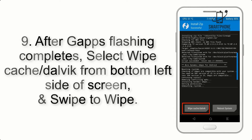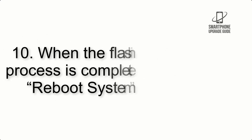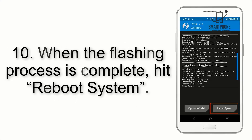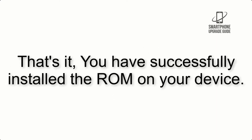Step 9: After GApps flashing completes, select Wipe Cache and Dalvik from the bottom left side of the screen and swipe to wipe. Step 10: When the flashing process is complete, hit Reboot System. That's it — you have successfully installed the ROM on your device.